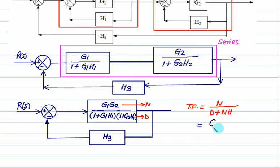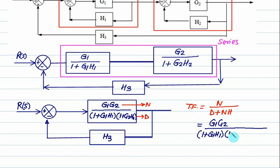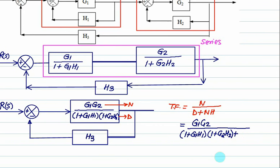Numerator into feedback — now let's substitute this. Numerator is G1·G2, whole thing is divided by denominator: 1 plus G1·H1 in first bracket, second bracket is 1 plus G2·H2. Then sign is plus. Then we have numerator G1·G2 and feedback H3. That is the answer. And if you have time, you can expand it and write it.